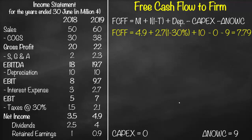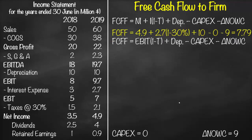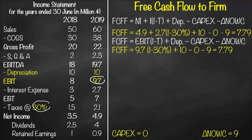This gives us Free Cash Flow to Firm of 7.79. A second formula is: FCFF = EBIT × (1 − t) + Depreciation − CapEx − Change in Net Operating Working Capital. From the income statement, EBIT = 9.7, multiplied by (1 − 30%), plus depreciation of 10, minus CapEx of 0, minus change in NOWC of 9. This gives exactly the same result: 7.79.